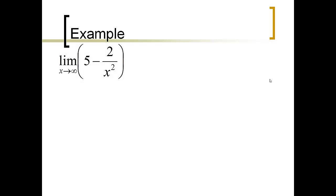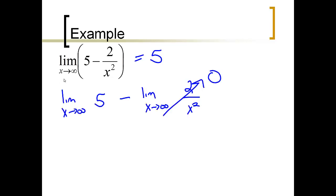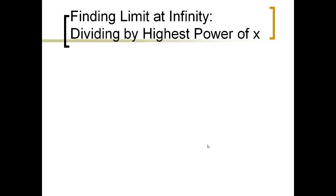Let's look at an example: the limit of 5 minus 2 over x squared as x approaches infinity is going to be 5. Why? Let's break it into parts. The limit of 5 is just 5 — it doesn't matter what x is. The limit of 2 over x squared, as x approaches infinity, goes to 0. So it becomes 5 minus 0, and you can subtract the limits to get 5.